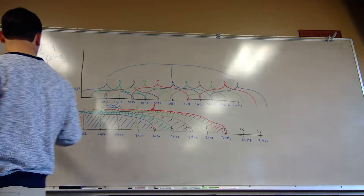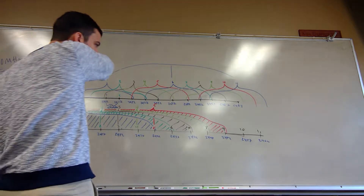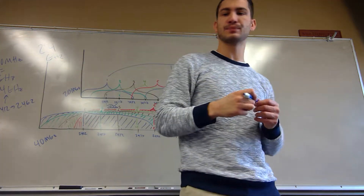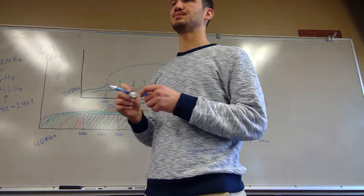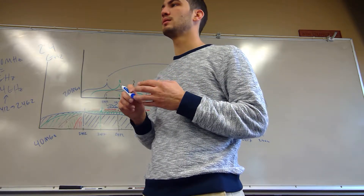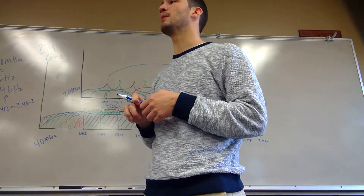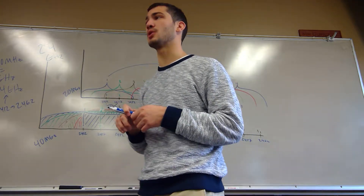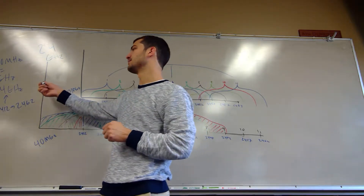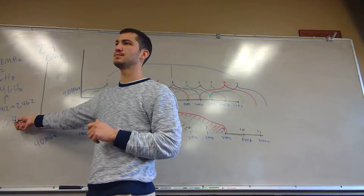For Wi-Fi we generally use 2.4 gigahertz, which goes from about 2.412 all the way to 2.460. Those are the frequencies your home internet relies on — along with cordless phones, microwaves, and almost anything wireless in your home. We now also have 5 gigahertz, which most home devices don't use.